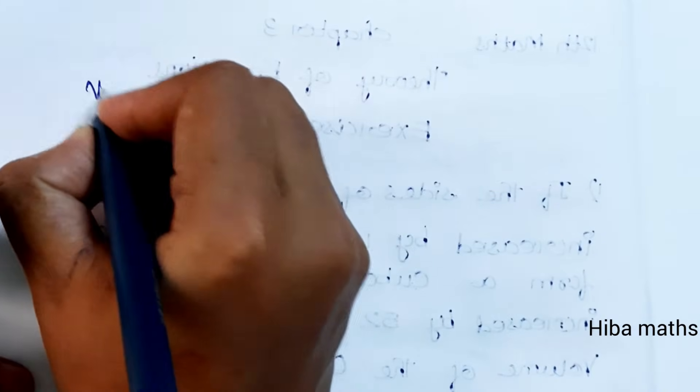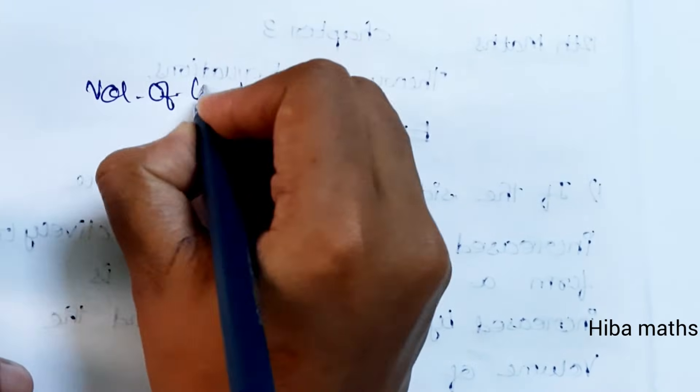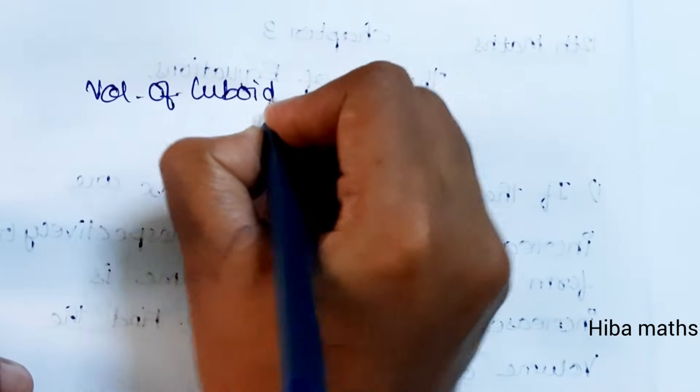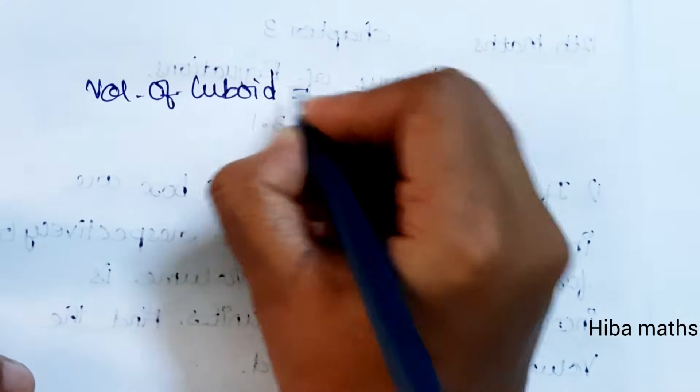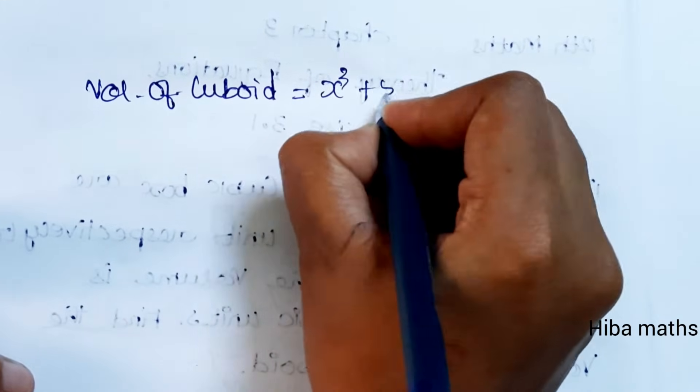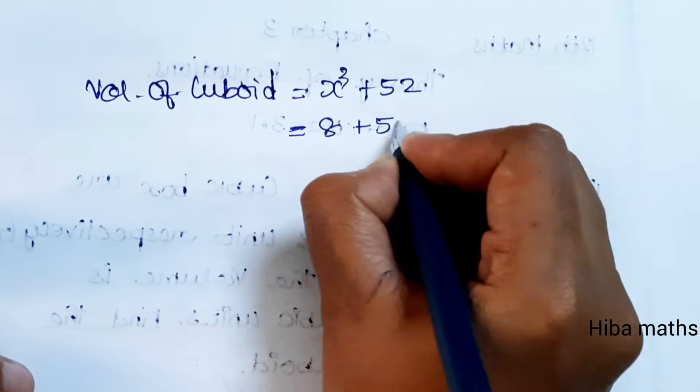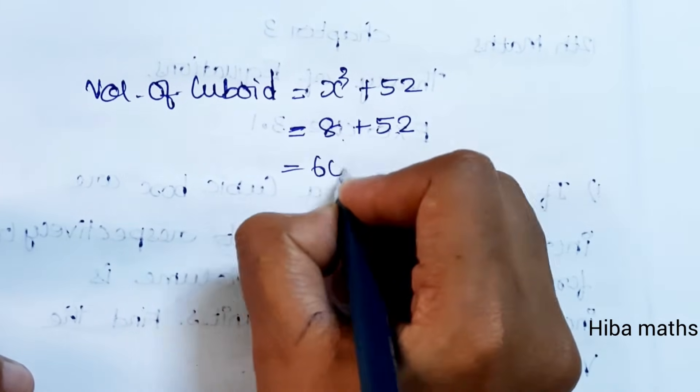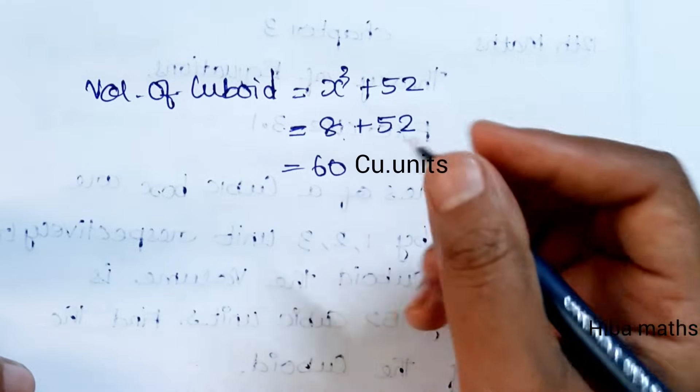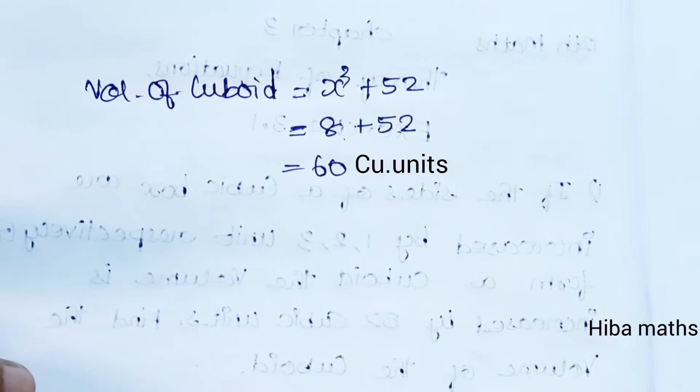Finally, we need volume of cuboid. We need volume of cube plus 52. x cubed value is 8, plus 52 gives 60. We need 60 cubic units. This is easy to understand. Thank you so much for watching.